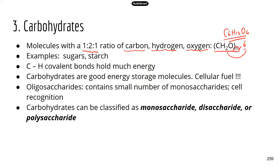Fructose, galactose — they all share that chemical formula. Remember this because you need to know glucose and its chemical formula. Examples of carbohydrates include sugars like those simple sugars I mentioned, and also complex carbohydrates like starch and fibers. You probably never thought about the fact that simple sugars, starch, and fibers are actually the same type of macromolecule — but they are. They're all carbohydrates.